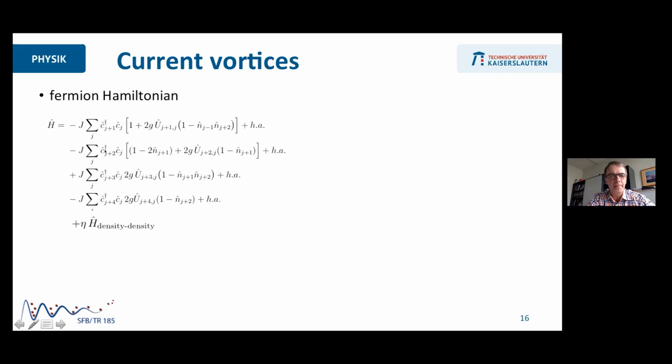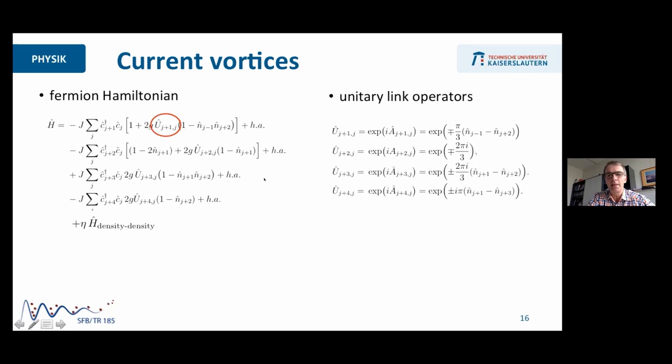If you take the Hamiltonian and write it in terms of Wigner-Jordan fermions, then we realize that all of the hopping processes are accompanied with some unitary link operators. These unitary link operators, the one which connects psi j to psi j plus two, this is essentially along the two sub-chains. So either in the upper or in the lower part, this is just a constant term, which we already have seen in the mean field Hamiltonian. But if you look at the other ones, then we see that there are additional unitary link operators popping up, which depend on density differences.